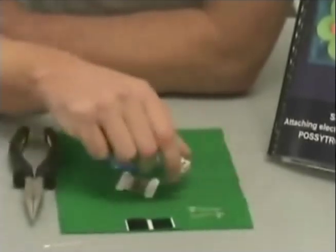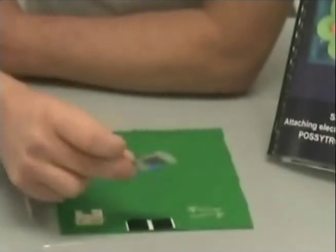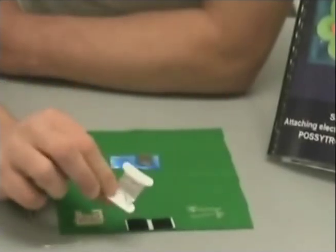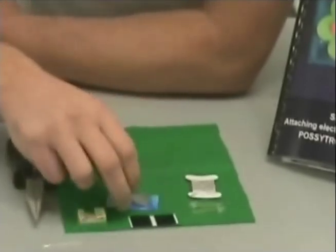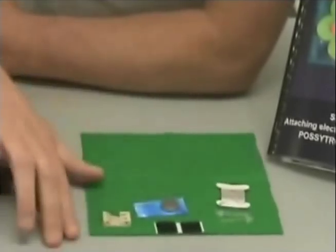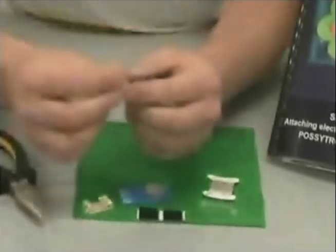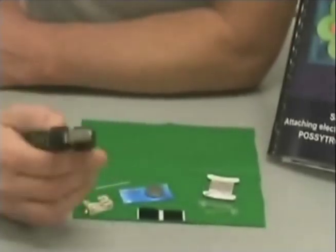A small strip of Velcro for attaching the battery cell holder to the textiles project, two meters of Possitronics Conductive Thread, and a cell battery. The standard equipment needed to attach electronics to textiles projects is a sewing needle and a set of pliers.